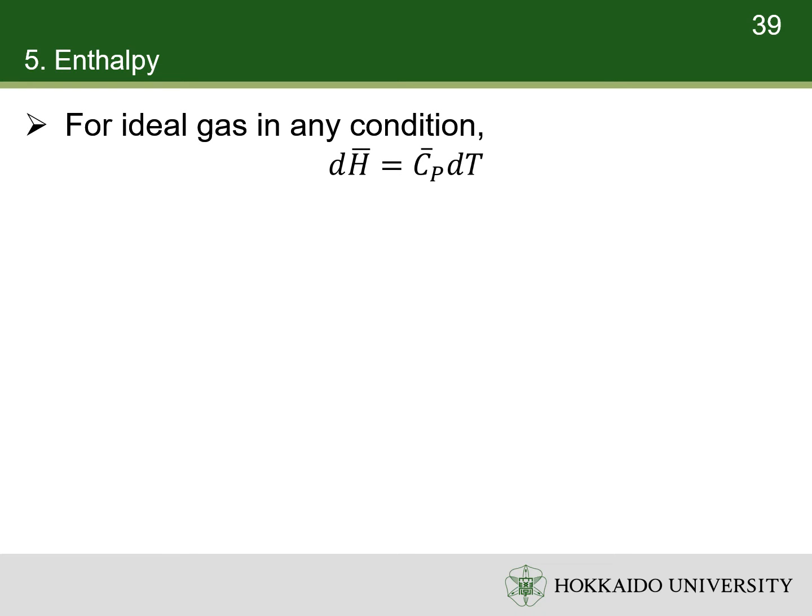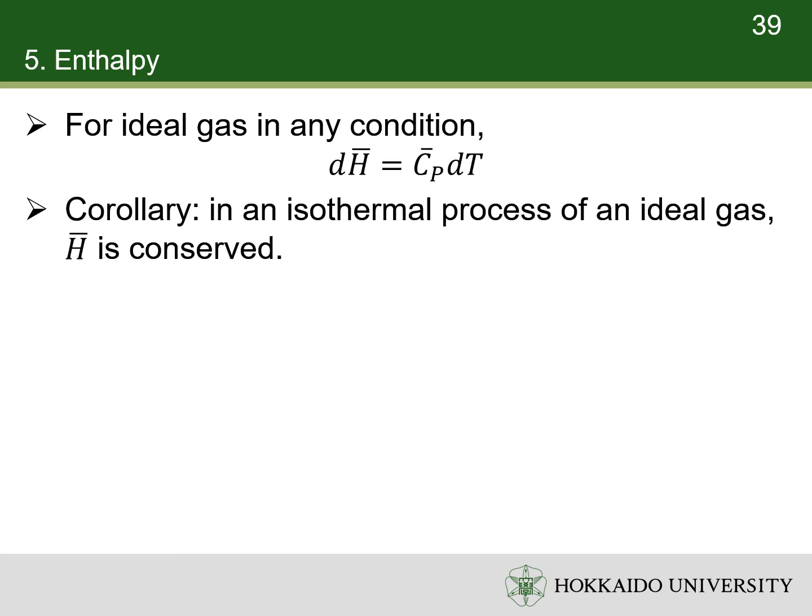Thus, for an ideal gas in any condition, the enthalpy change is Cp·dT. It leads to the corollary that in an isothermal process of an ideal gas, the enthalpy is conserved.